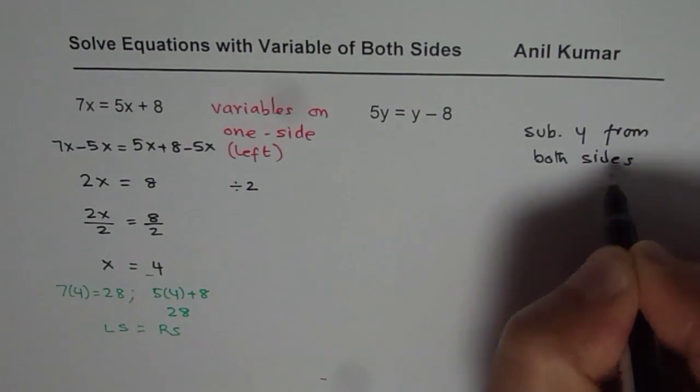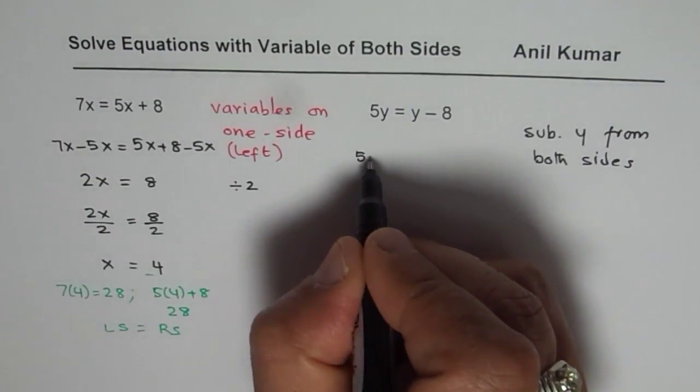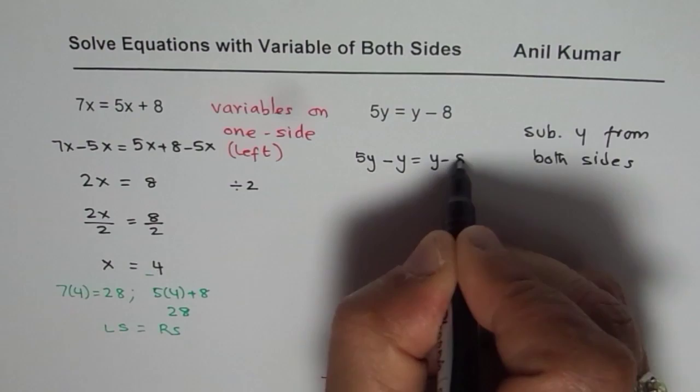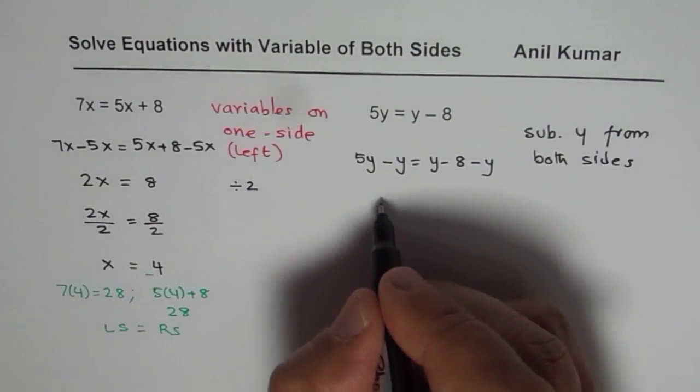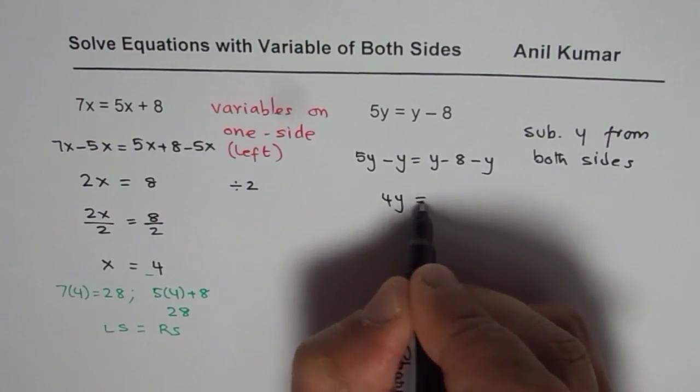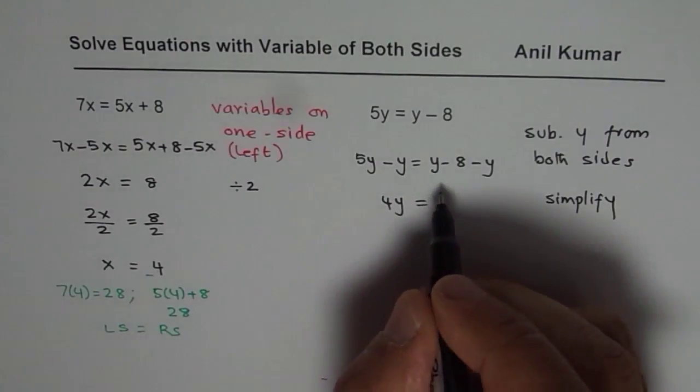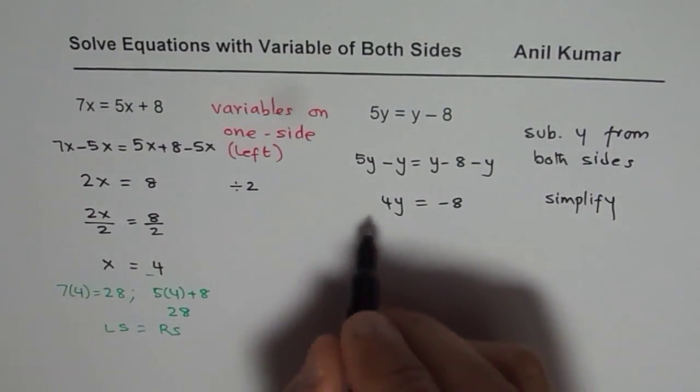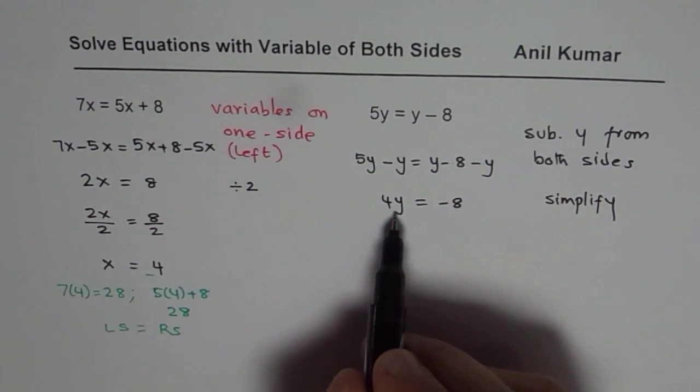In the previous case we subtracted 5x from both sides. So the variable: 5y minus y equals y minus 8 minus y. 5y minus y is 4y. So next step is simplify. Y minus y is 0. You are left with minus 8. So you get an equation in which you have one variable only and that too on left side.